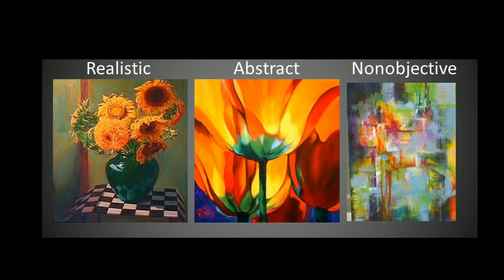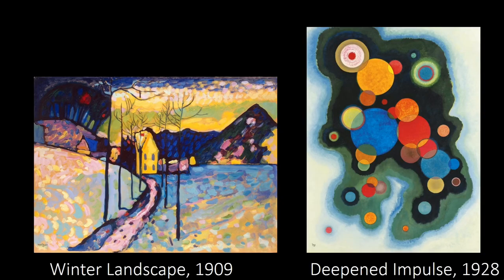Instead, non-objective art just focuses on shape and color. In this example we can see that the realistic artwork is of sunflowers — we can easily tell what that is. The abstract art is also flowers but doesn't quite look realistic, and in the non-objective artwork we cannot tell what it's supposed to be; all we can see is different shapes, color, and texture with a focus on the seven elements of art.